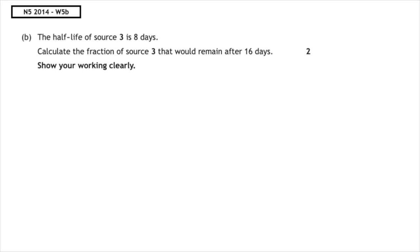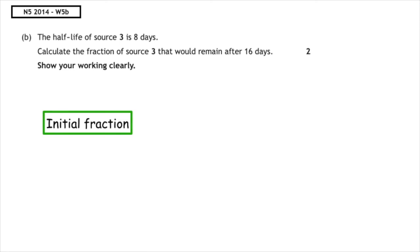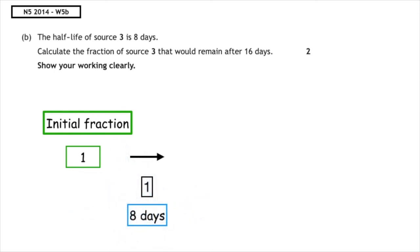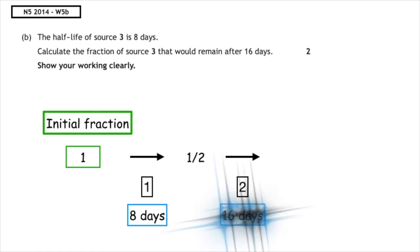This past paper question is from the National 5, 2014, written 5b. The half-life of source 3 is eight days. Calculate the fraction of source 3 that would remain after 16 days — show your working clearly. We can see that we're working in fractions, so we always start with one. If it undergoes one half-life, which is a total of eight days, it would leave a half. If it underwent a second half-life, that would give us a total of 16 days, which is given in the question. The final fraction will be a quarter.